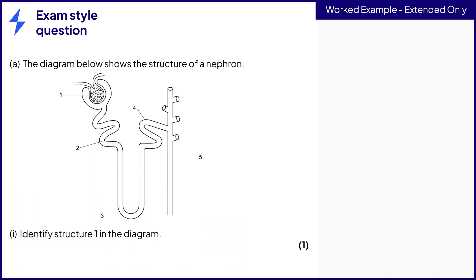We can see that the label line for structure 1 points towards the knot of capillaries located inside the Bowman's capsule, which would be the glomerulus.